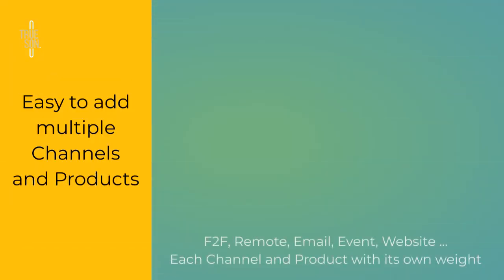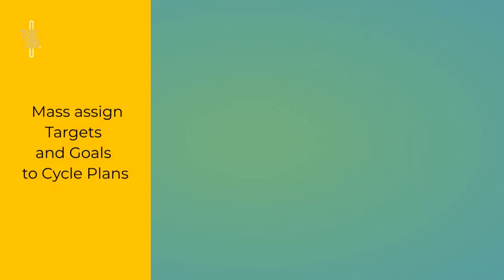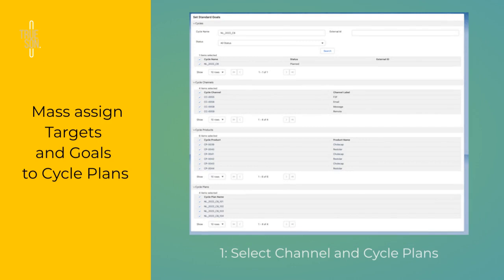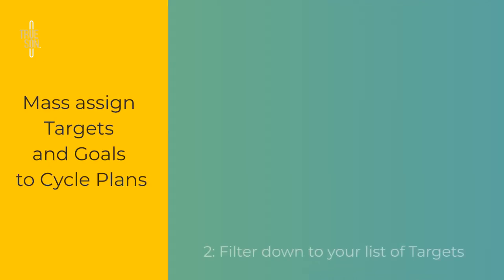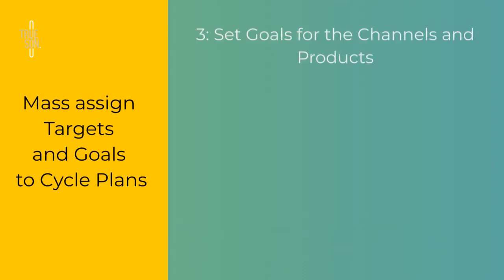Set up your cycle easily, with multiple channels and products matching your multi-channel cycle strategy. Set standard goals by segment, using your account and segmentation information. Select accounts by segment, using information from the accounts such as specialty and product metrics.